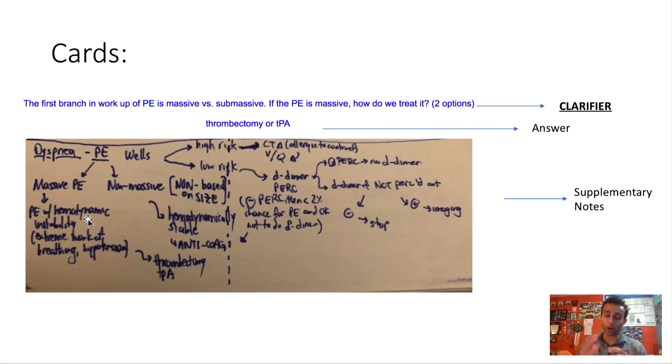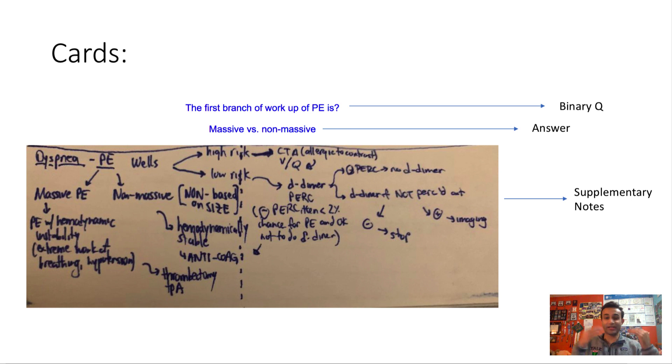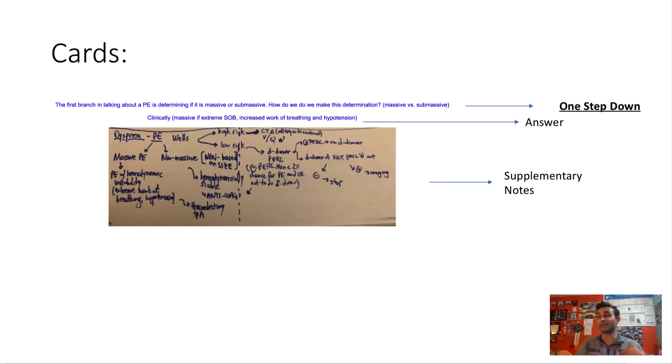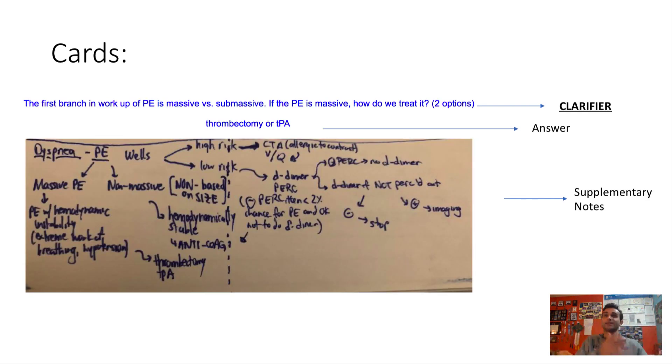Notice how I actually worked my way down this branch, and I made a card that was purely based on one part of that branch. The point of making a card like this is to get this whole diagram in my head. Because as you saw, my first card was, what is the first branch? It's massive versus submassive. Then I asked, how do you determine if it's massive versus submassive? Oh yeah, hypotension. Now let's say the patient has a massive PE. How do I treat it? Thrombectomy or TPA?